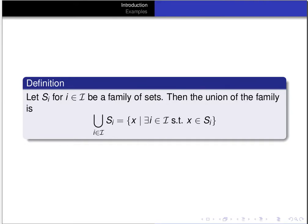The index set i could be finite — it could just be sets S1 and S2 — or it could be infinite. i could be all of the natural numbers or all the real numbers, as we'll see in our examples later.